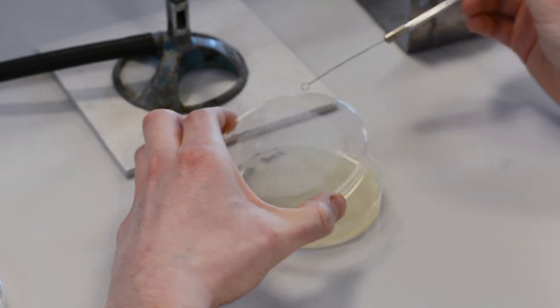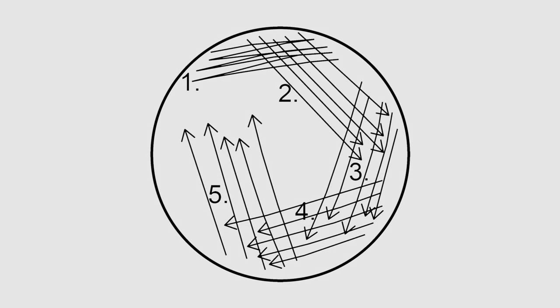Plates are usually kept close to the Bunsen burner flame as you work with them. This minimizes the possibility of unwanted microorganisms or contamination.